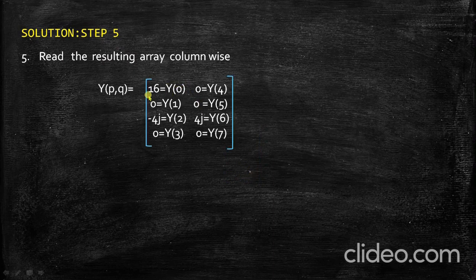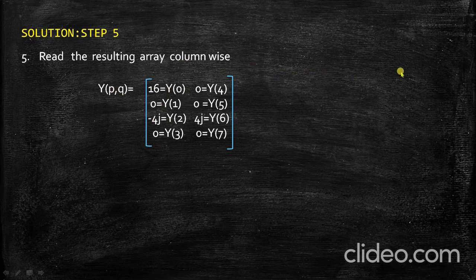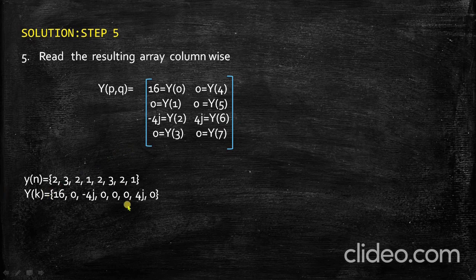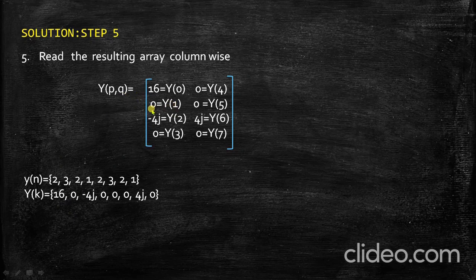For the column-wise reading, we take the first column first and then move to the next column once complete. The resulting DFT transformation signal sequence is Y(0), Y(1), Y(2), ..., Y(7). Reading column-wise: Y(0)=16, Y(1)=0, Y(2)=0, Y(3)=0, Y(4)=-4j, Y(5)=0, Y(6)=0, Y(7)=4j. Comparing input y(n) = {2, 3, 2, 1, 2, 3, 2, 1} with the DFT output, we verify the sequence is correct.